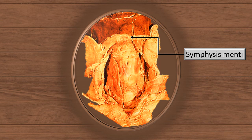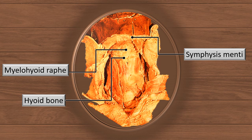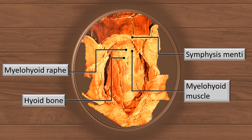That's the symphysis menti — the point where the two halves of the mandible are joined in the midline. From there, extending down is a midline raphe where the fibers of the mylohyoid muscle of the two sides cross. The lower end ends at the hyoid bone. The hyoid bone in this dissection is not so clearly visible because it's covered by muscles and fascia. I will try to show you a slightly better version in the next few slides. That's the mylohyoid muscle, one from each side. They both come to the midline, there's a small intercross of fibers, and that's the mylohyoid raphe. The mylohyoid muscle takes origin from the mylohyoid line on the inner aspect of the body of the mandible.